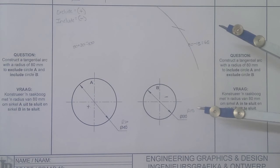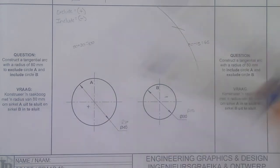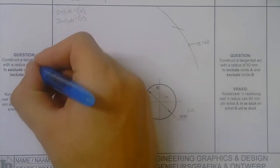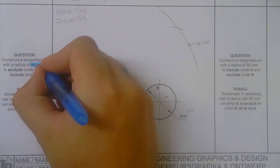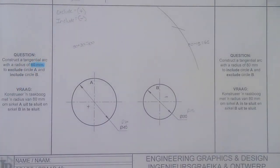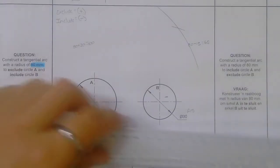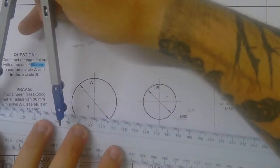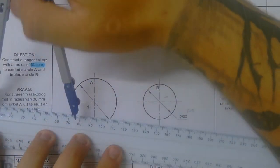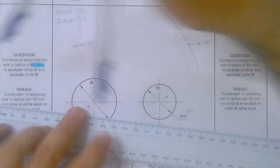Now pay attention to this: we always use the size they give us. So that is 80 millimeters. So set your compass to 80 millimeters.